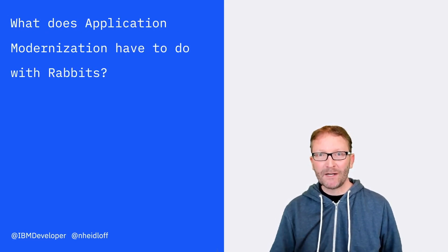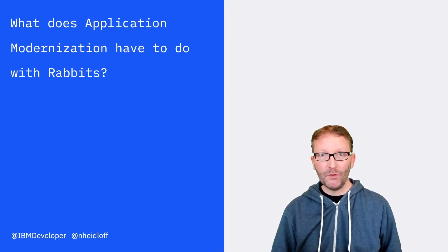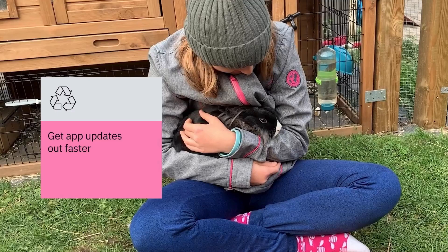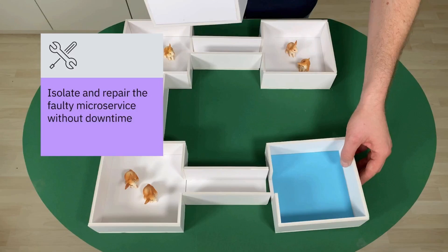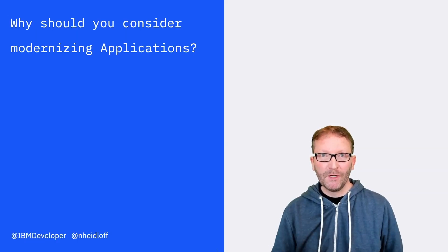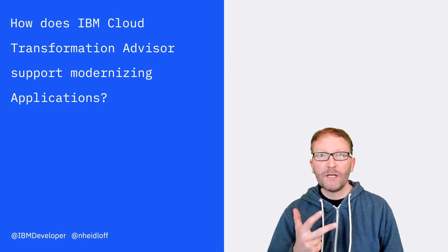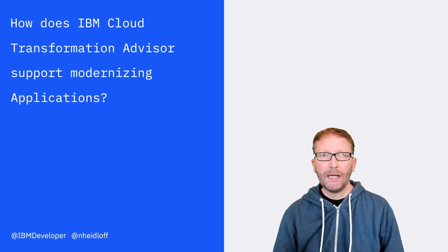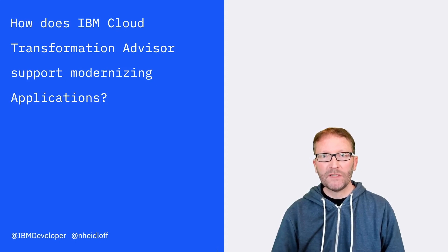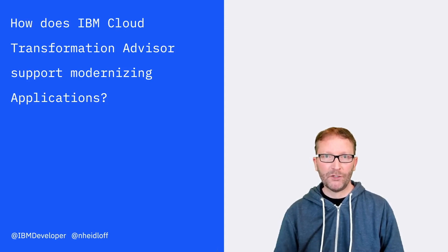Question number one: what does application modernization have to do with rabbits? Question number two: why should you consider modernizing your applications? Question number three: how does IBM Cloud Transformation Advisor support modernizing applications?